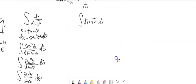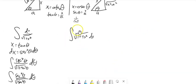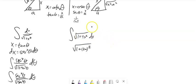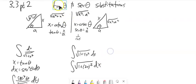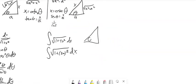Let's do another one. I've got an integral with 1 + 4x². I can think of 4x² as (2x)², so now it's in the form a² + x² with the substitution variable being 2x rather than x. This is the tangent case, and a = 1 with x replaced by 2x.